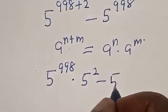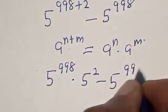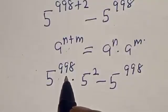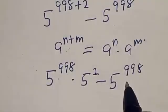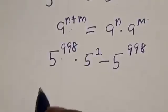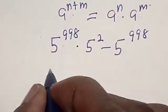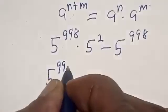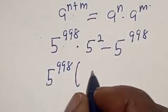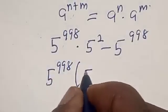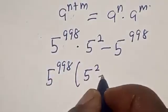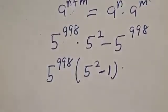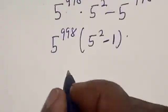Here we have 5 raised to power 998 and this is 5 raised to power 998. Let's factor it out. We have 5 raised to power 998 into 5 squared minus 1.